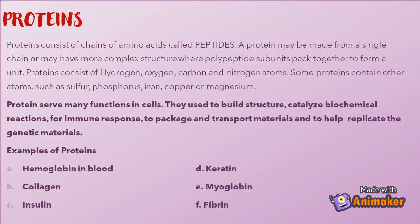Proteins consist of chains of amino acids called peptides. A protein may be made from a single polypeptide chain, or may have a more complex structure where polypeptide subunits pack together to form a unit. Proteins consist of hydrogen, oxygen, carbon, and nitrogen atoms. Some proteins contain other atoms such as sulfur, phosphorus, iron, copper, or magnesium.